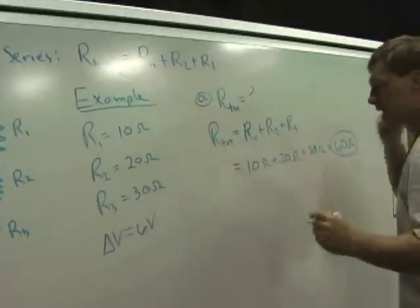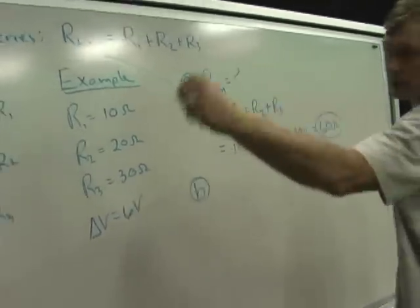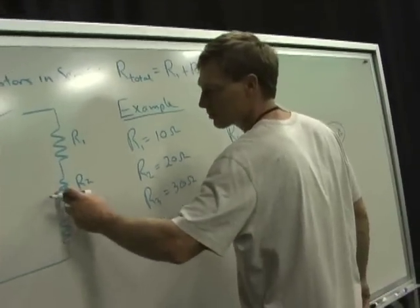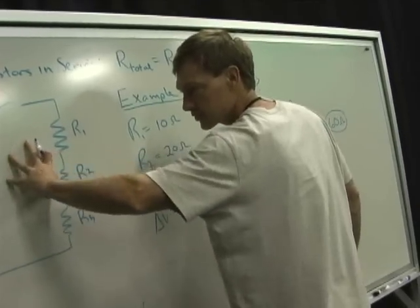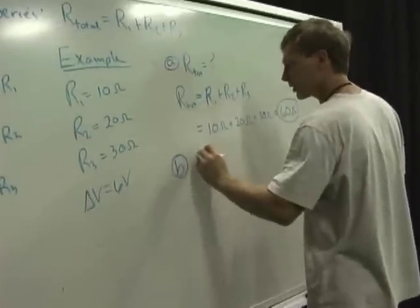Now B, what's the current through the system? There's only one path, so the current's the same all the time. It's not like it slows down when it gets here, and speeds up and slows down. It's all moving at the same rate as soon as you turn on the system. So what's the current?